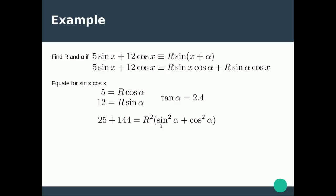Then what I've done is taken one step extra, I've factorized out the R squared. Now hopefully you recognize that sin squared alpha plus cos squared alpha equals 1. So that effectively goes and we're left with R squared equals 169, so R equals the square root of 169 which is 13.